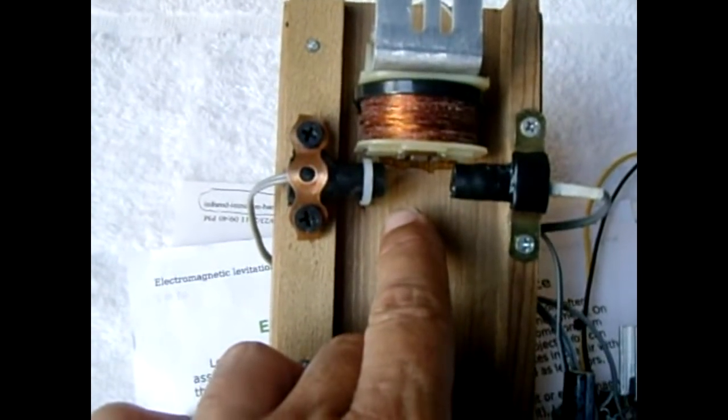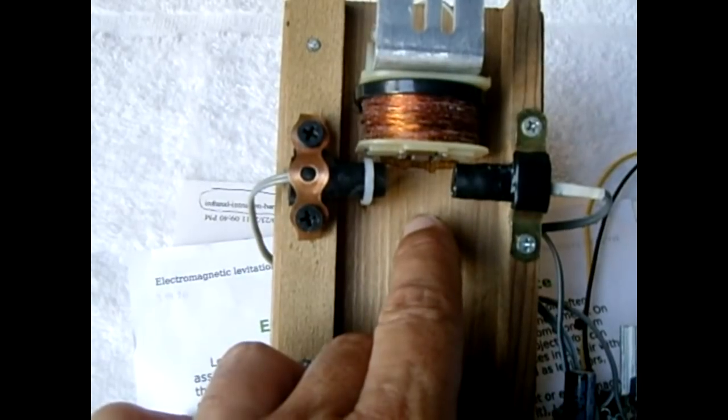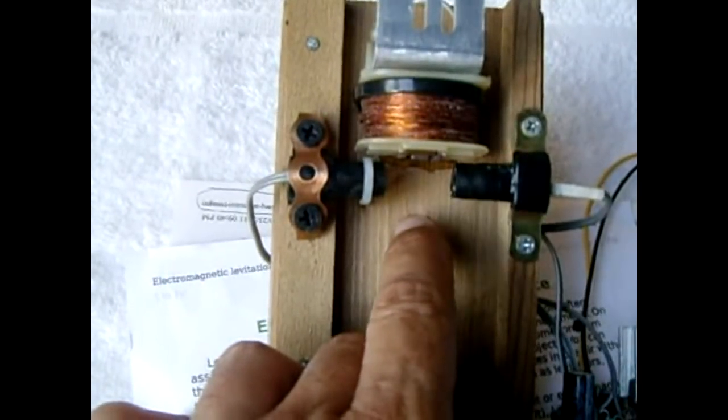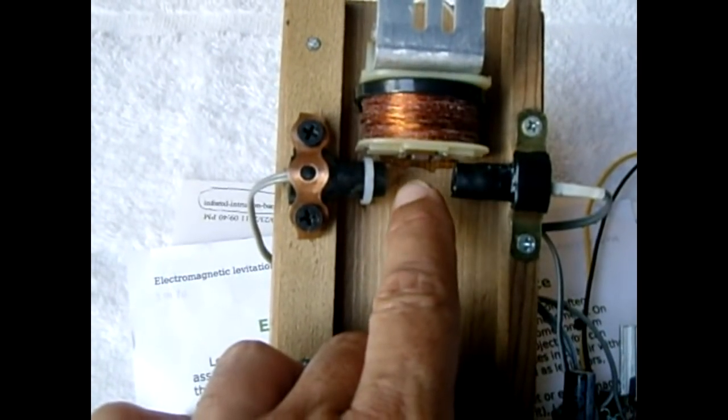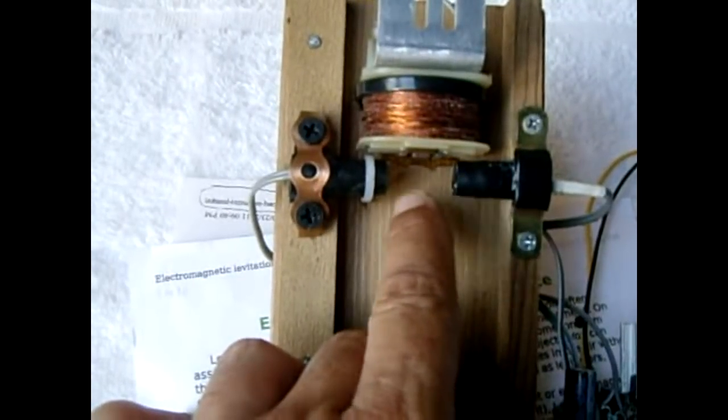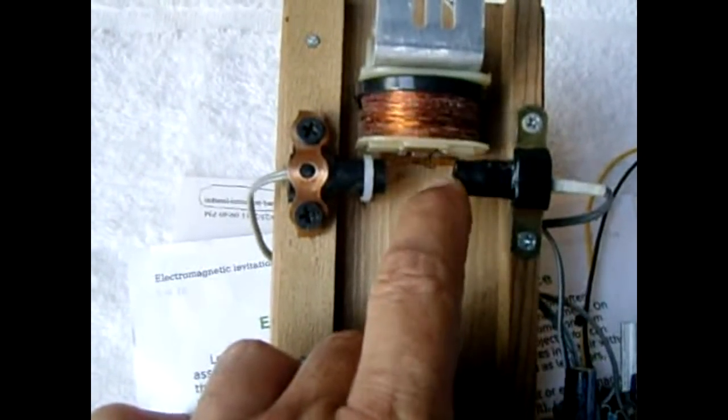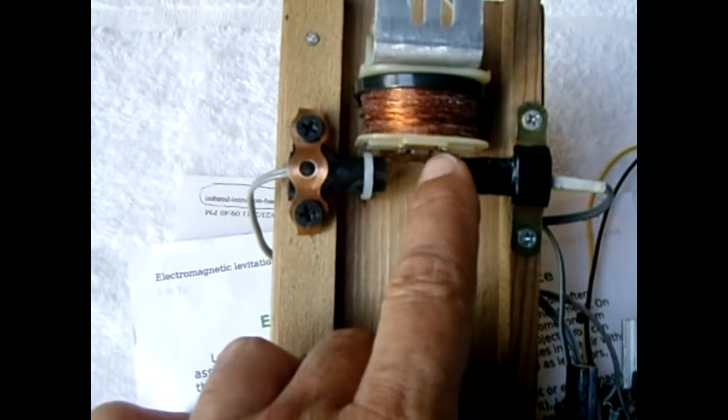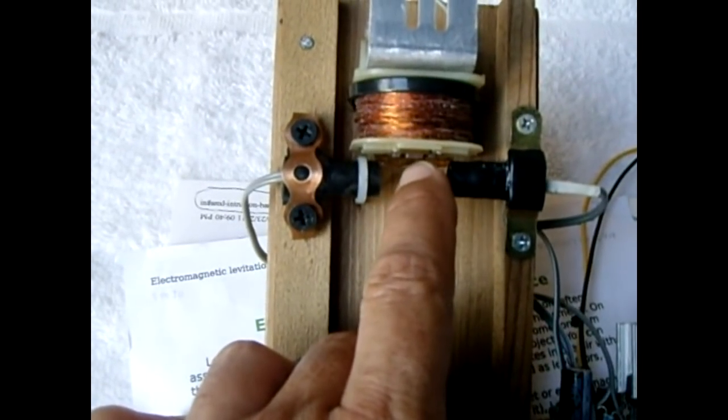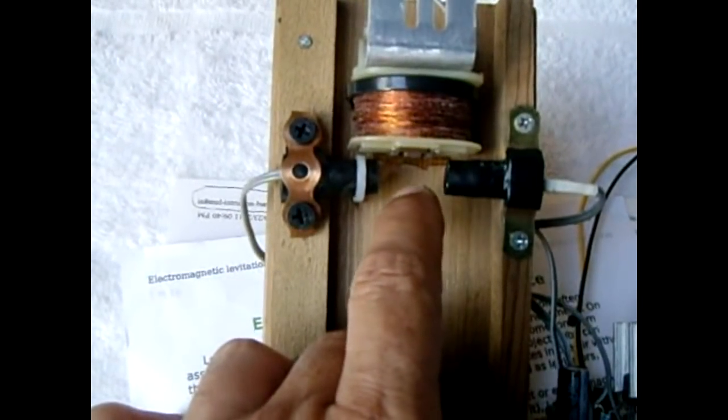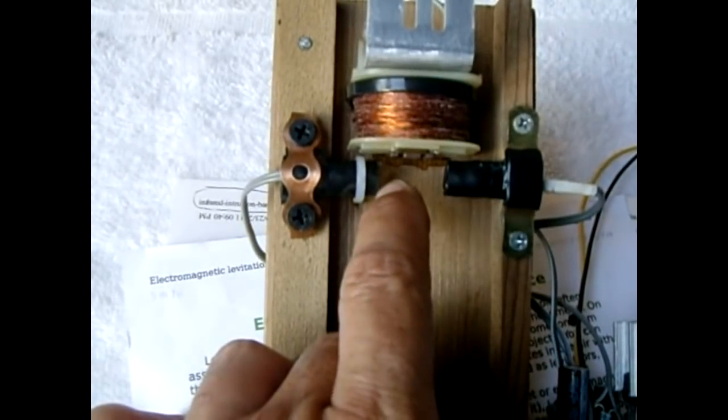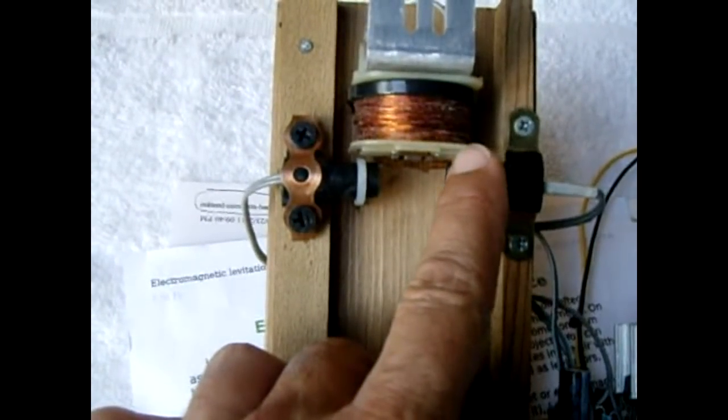Now, the magnet will start to pull the object up. Once the object rises up, the beam will start to get blocked. So, once the beam gets blocked, power to the coil goes off. Once the power goes off, what will happen, the object will fall, and then the beam will connect again, allowing power to go back to the coil.